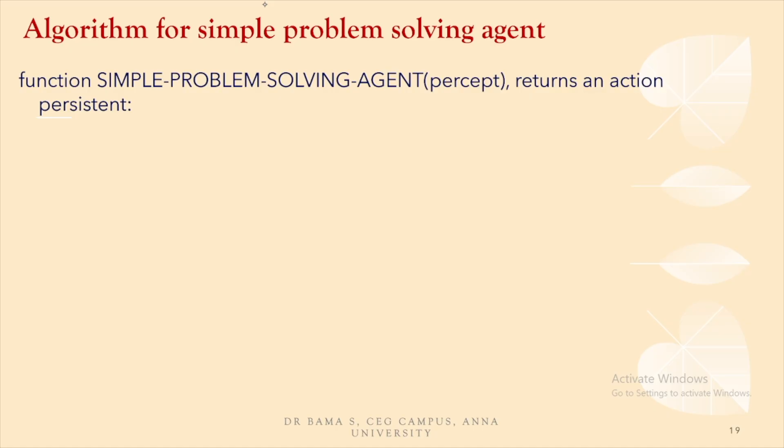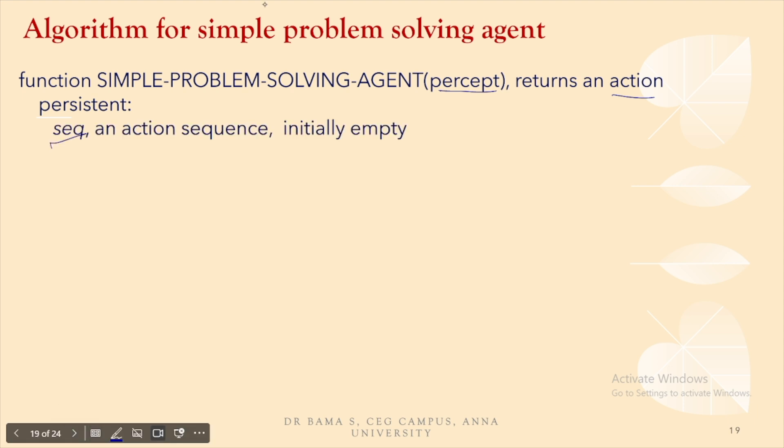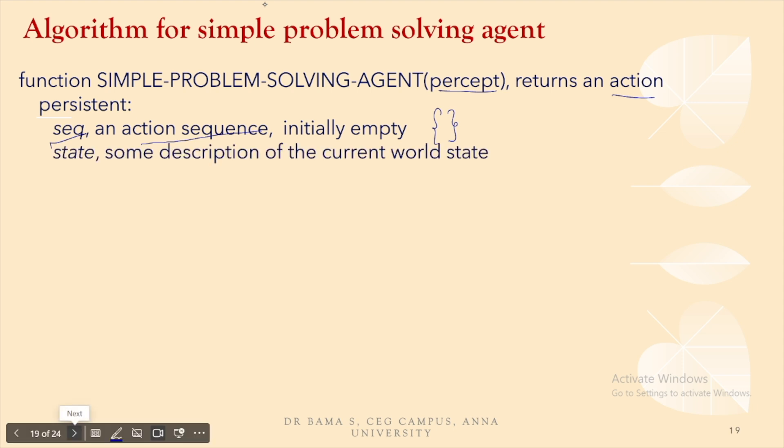We have now seen four different examples for problem representation. Given an agent with a starting state, ending state, and a goal, we can formulate a proper problem representation in terms of state space with initial state, final state, actions, and cost. This is a simple algorithm for a problem-solving agent: the input is a percept from the environment, it returns an action, and it maintains an action sequence variable that starts empty.